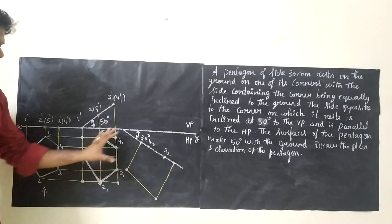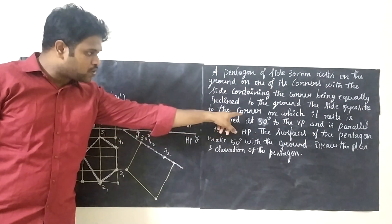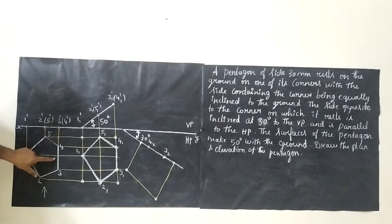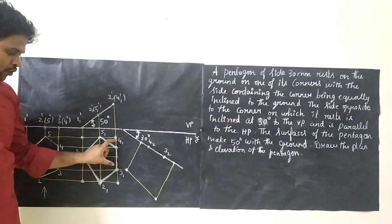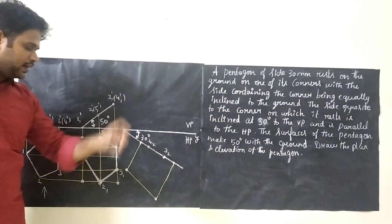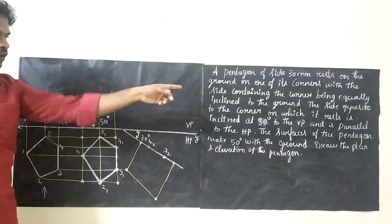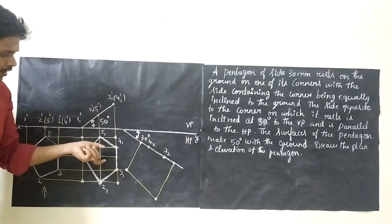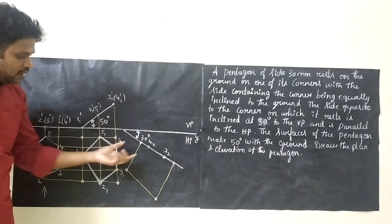Now we draw the edge inclination. The side opposite to the corner will be inclined at 30 degrees to VP. This corner is corner 1, so the opposite side is 4-3. Draw an inclined line at 30 degrees to VP. On that line, place side 4-1, 3-1 — measure this line and keep it with the same dimension on the inclined line.